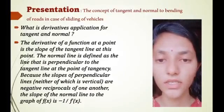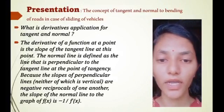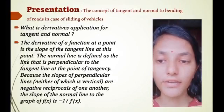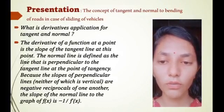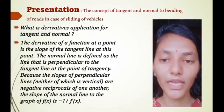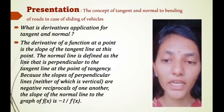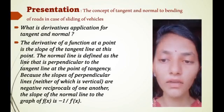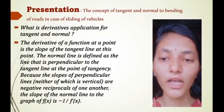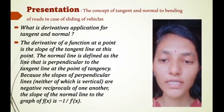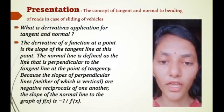First point of my presentation is what is derivatives application for tangent and normal. The derivative of a function at a point is the slope of the tangent line at this point. The normal line is defined as the line that is perpendicular to the tangent line at the point of tangency. Because the slopes of perpendicular lines, either of which is vertical, are negative reciprocals of one another, the slope of the normal line to the graph of f(x) is -1/f'(x).